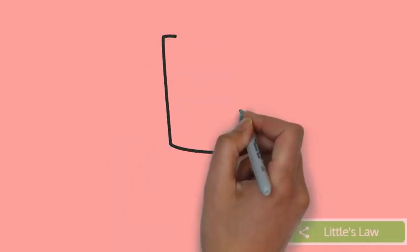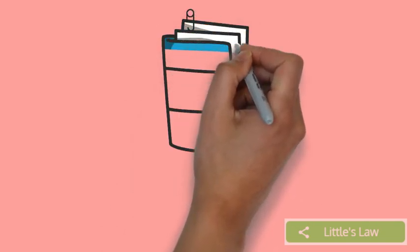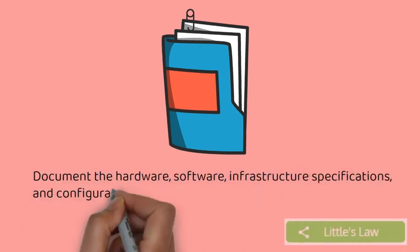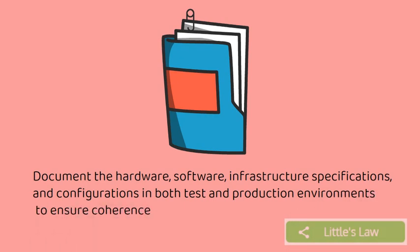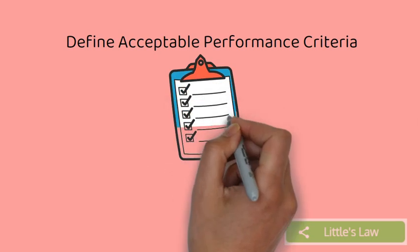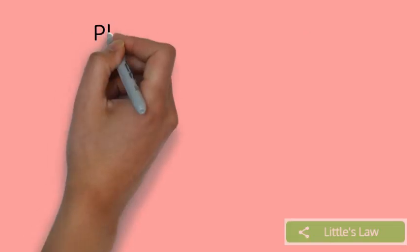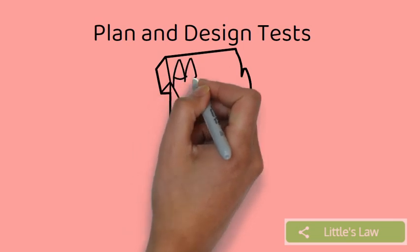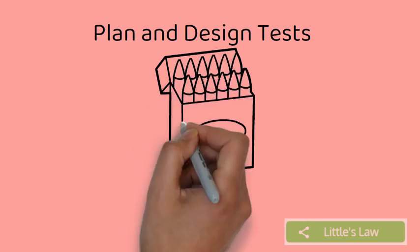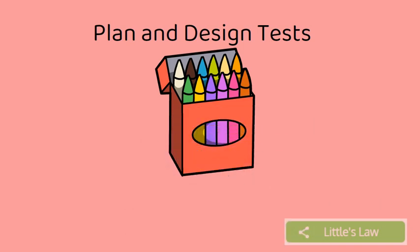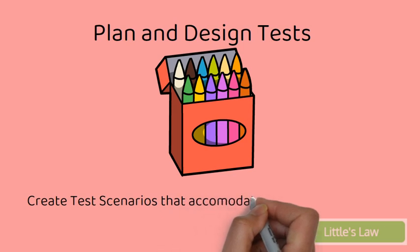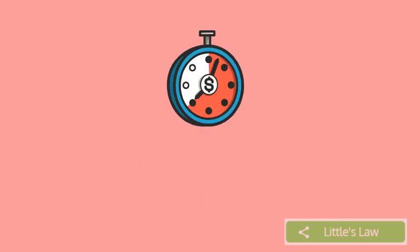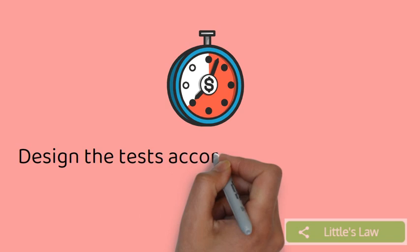The testing process continues with documenting the hardware, software, infrastructure, and configuration involved in testing. Next comes planning and designing. First, we have to create the test scenarios that accommodate all the critical use cases. The test has to be designed accordingly, and we outline the metrics that should be captured during performance testing.